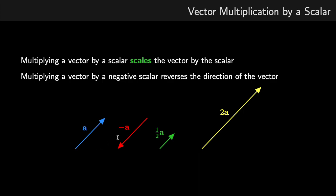If I multiply A by a negative number, it has the effect of reversing the direction. So here we have A, or multiply by minus 1, so the vector minus A has the same length as A, but just points in the opposite direction.